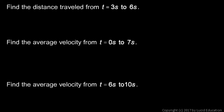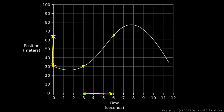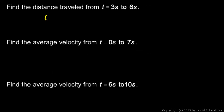These first few questions relate to the graph but they're not actually derivatives. The first question is: find the distance traveled from three seconds to six seconds. At three seconds, the position is 30 meters, and at six seconds it's at about 65 meters. So the distance traveled during that time interval would be 65 minus 30, which is 35 meters.